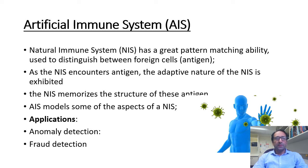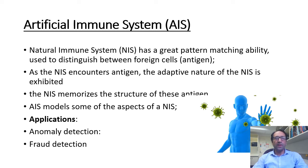Artificial immune system. The natural immune system, or NAS, has an amazing pattern matching ability, which is used to distinguish between foreign cells entering the body — referred to as antigens — and the cells belonging to the body. As the NAS encounters antigens, the adaptive nature of the NAS is exhibited, with the NAS memorizing the structure of these antigens for faster future response. An artificial immune system, or AIS, models some aspects of the NAS and is mainly applied to solve pattern recognition problems, perform classification tasks, and cluster data. One of the main application areas of AIS is anomaly detection, such as fraud detection and computer virus detection.